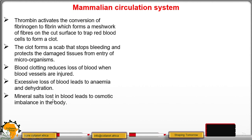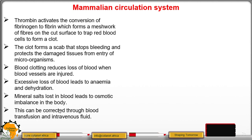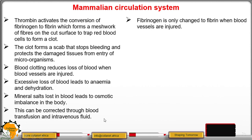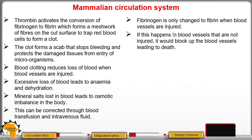Excessive loss of blood leads to anemia and dehydration. Loss of mineral salts in the blood leads to osmotic imbalance, which can be corrected through blood transfusion and intravenous fluid. Fibrinogen is only converted into fibrin when a blood vessel is injured — if it happens in uninjured vessels, blood vessels become blocked due to clot formation, which can be fatal.